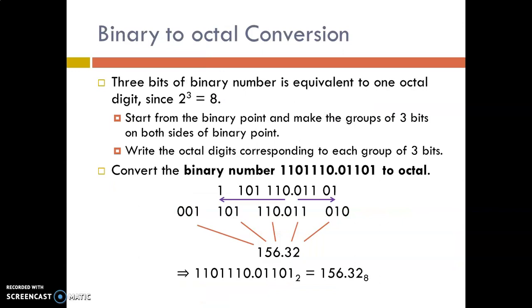Next, we will see how to convert a binary number to an octal number. Since the base of binary is 2 and the base of octal is 8, 3 bits of a binary number is equivalent to 1 octal digit, because 2 power 3 equals 8. We are going to start from the decimal point and make groups of 3 bits on both sides. If some bits are less while making a group of 3 bits, include the required number of 0s on the extreme sides.